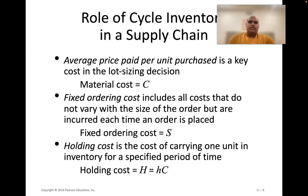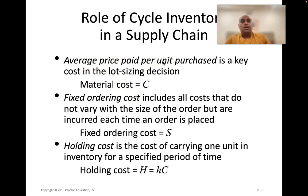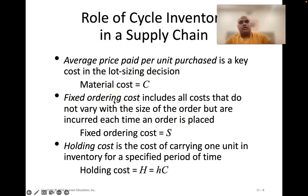We'll talk about a few key parameters needed to understand how cycle inventory is managed. The first is material cost — the average price you pay to purchase or manufacture one unit. The second is fixed ordering cost, which includes all costs that do not vary with the size of the order. Whether you order 10 items or 100 items, some costs are fixed, like the time spent placing an order.